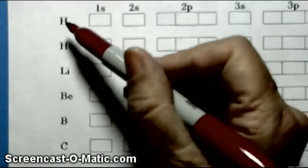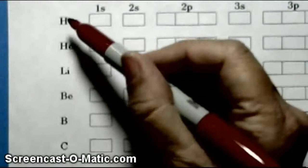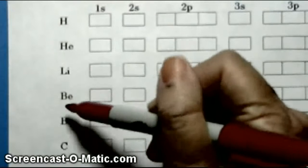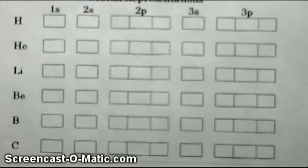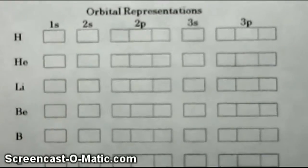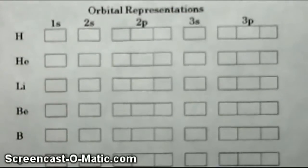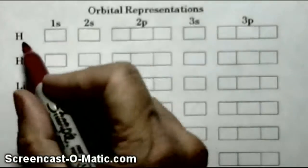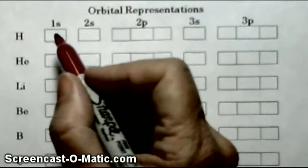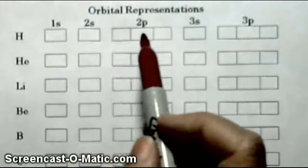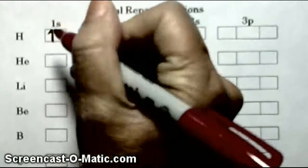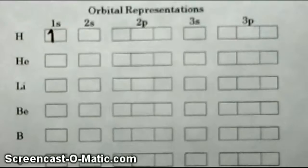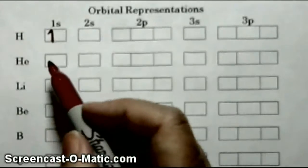On the side we have the atoms from the periodic table starting with hydrogen, atomic number one, helium two, lithium, beryllium, boron, carbon — going along the periodic table. We're going to add electrons to this box diagram using arrows, or half arrows, to represent the electrons. For hydrogen, we have one electron. It goes in the lowest possible orbital — the 1s orbital. That's the representation for the hydrogen atom with one electron in the 1s orbital.